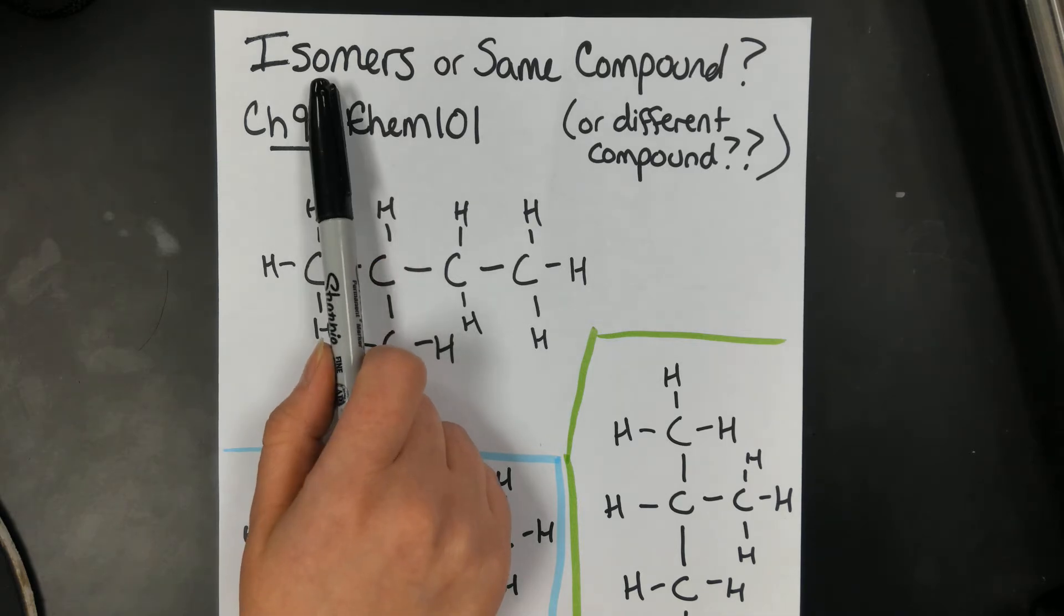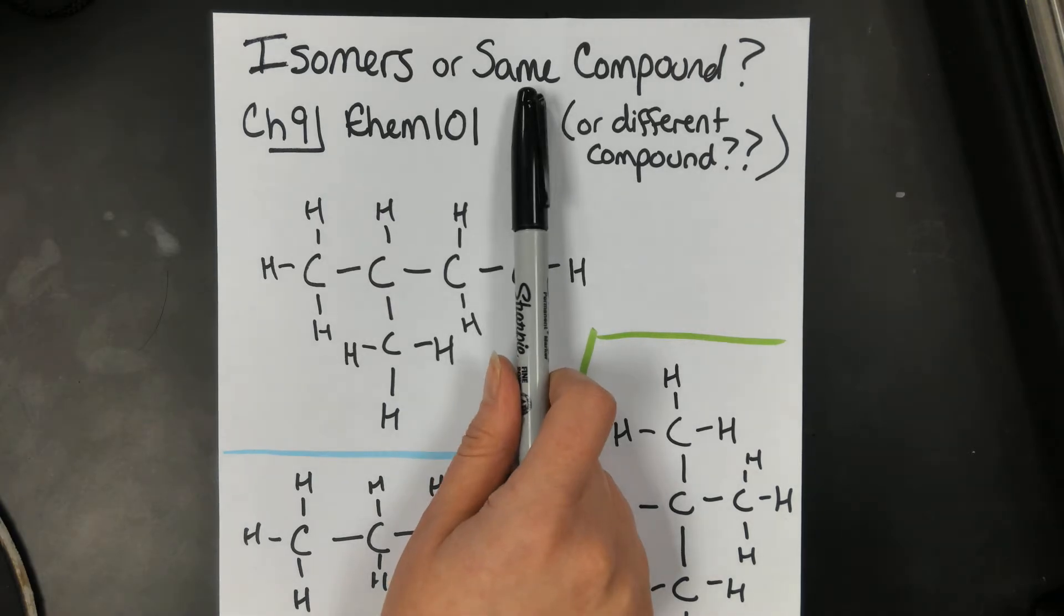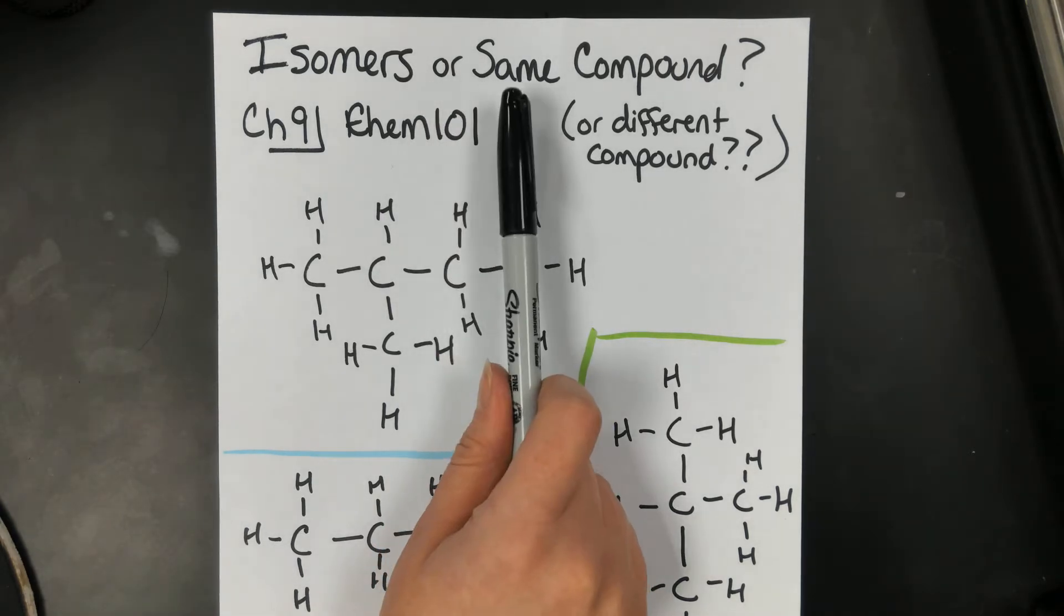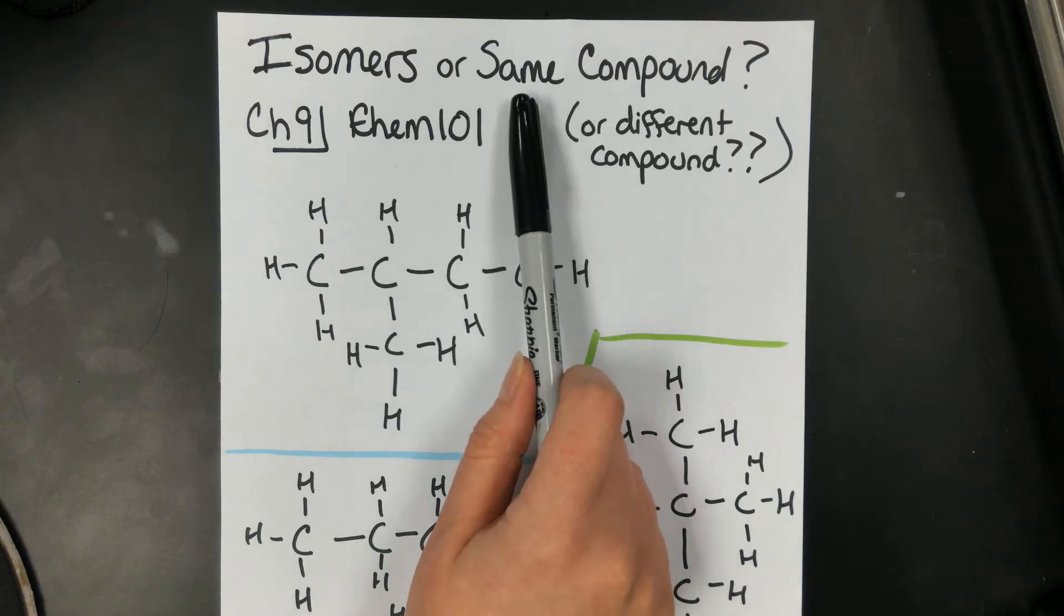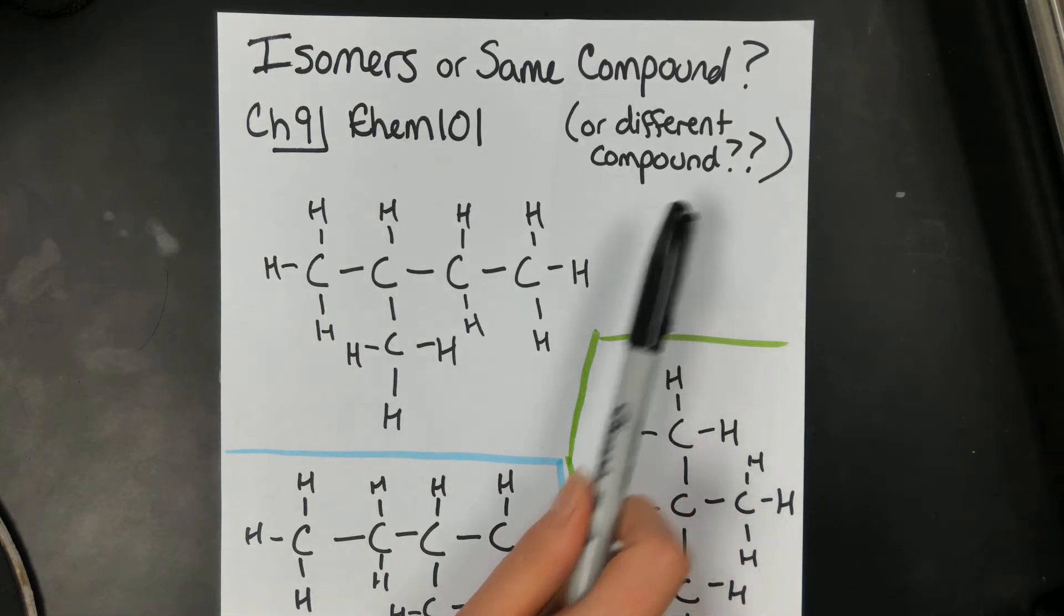Or the skeleton is kind of shaped different. Same compound, I could draw a compound, but kind of do a reverse mirror kind of image, or draw it vertical. You have to be able to identify if it's the same compound, or if it's a completely different compound.